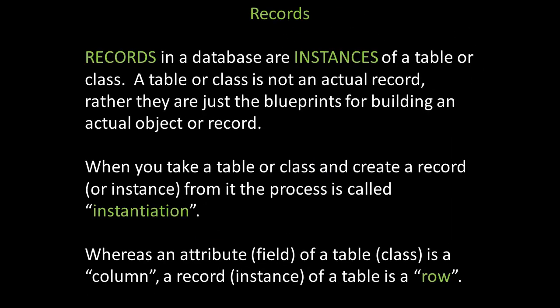Records in a database are instances of a table or class. A table or class is not an actual record — they are just blueprints for building an actual object or record. When you take a table or class and create a record or instance from it, the process is called instantiation. An attribute or field of a table is a column, while a record or instance of a table is a row.